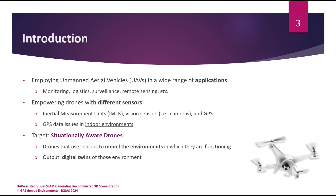As an introduction, unmanned aerial vehicles, or UAVs, or in simple words drones, have been used in a wide range of applications including monitoring, logistics, surveillance, and many other use cases. Such robots have been empowered with a wide range of different sensors, including inertial measurement units or IMUs, vision sensors, and GPS. But the main problem with GPS is that in indoor applications and indoor environments, there is a risk that it doesn't work properly.